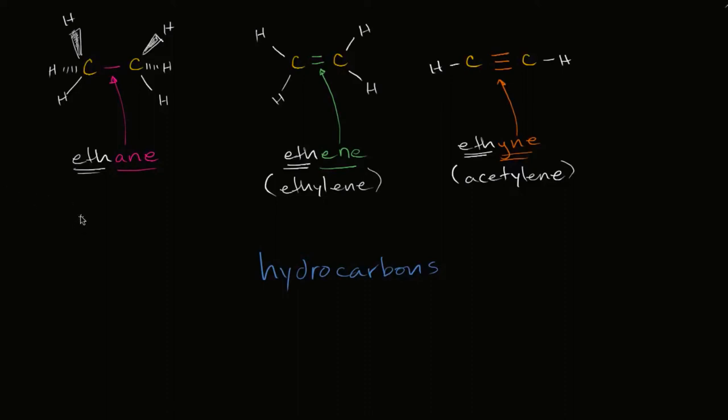Actually let me write these general terms down. So I could write alkane. Alkane is the general term for a chain of carbons that has no double or triple bonds. And specifically this is ethane. If I were to speak generally here, I'd say alkene. I would say alkyne right over here.